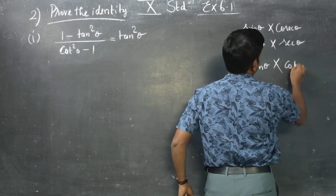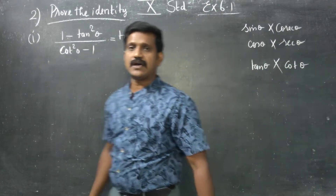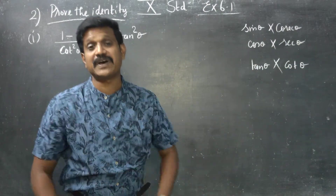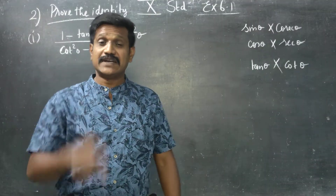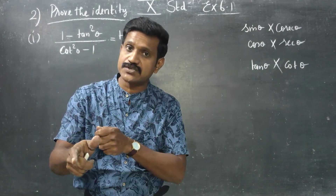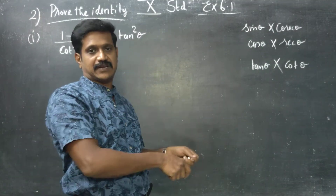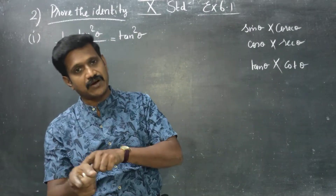tan theta and cot theta are also reciprocals. tan is equal to 1 by cot, and cot is equal to 1 by tan. This is the reciprocal formula.